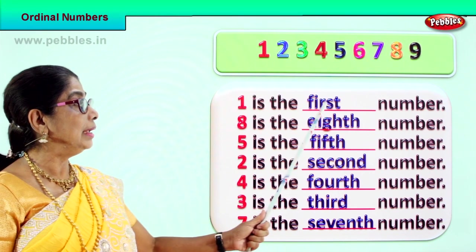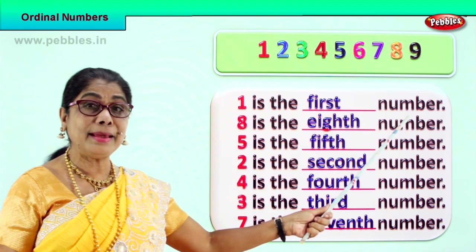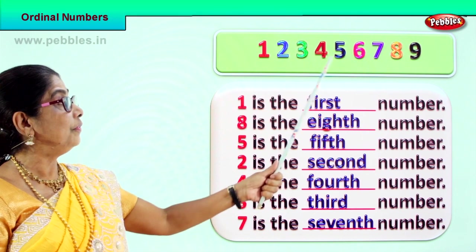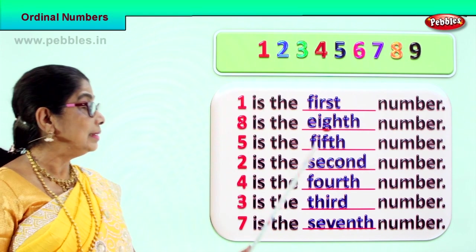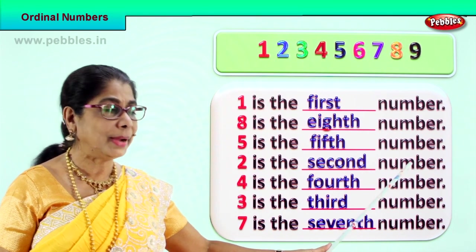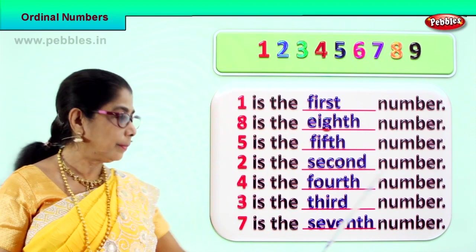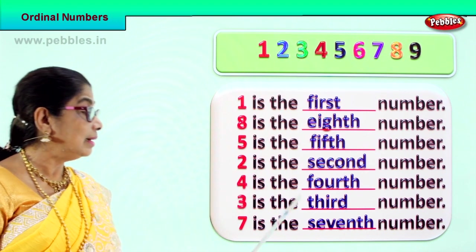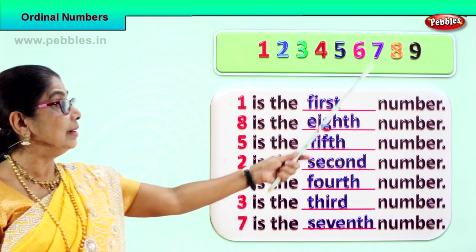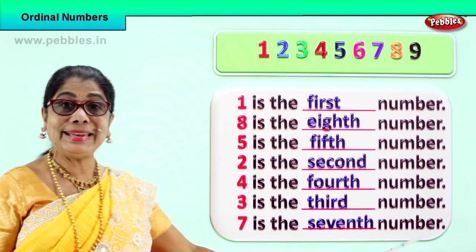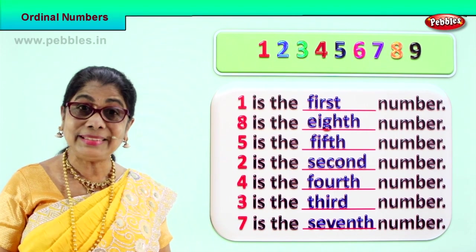Let's read the position of each of these numbers. Number one is the first number. Number eight is the eighth number. Five is the fifth number. Two is the second number. Four is the fourth number. Three is the third number. And seven is the seventh number. Did you learn ordinal position of numbers? Good.